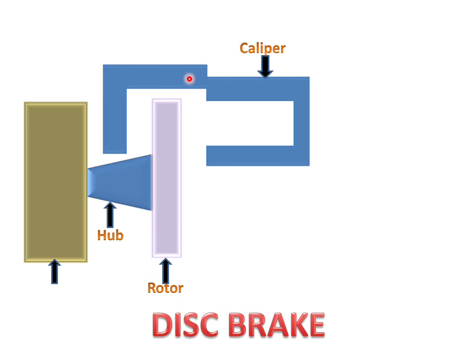There is a caliper of the disc brake. The caliper is the upper cover of the disc brake. This is the piston in the caliper. This is the brake pads of the disc brake.